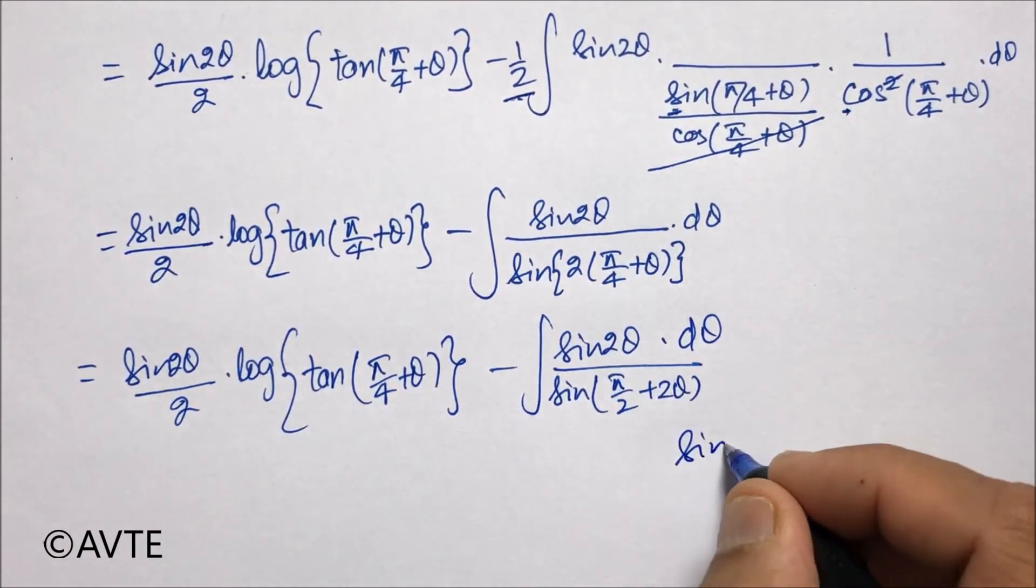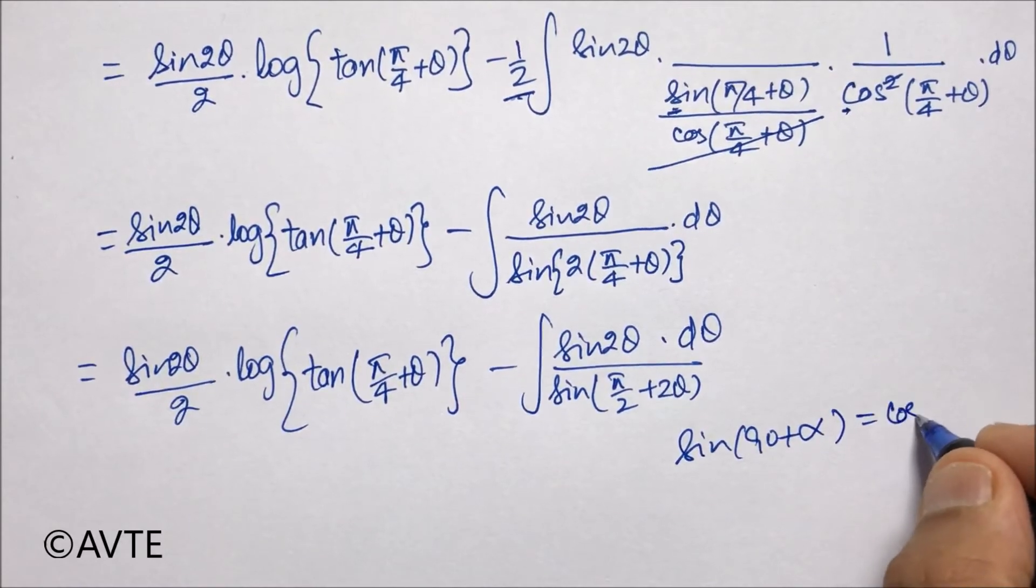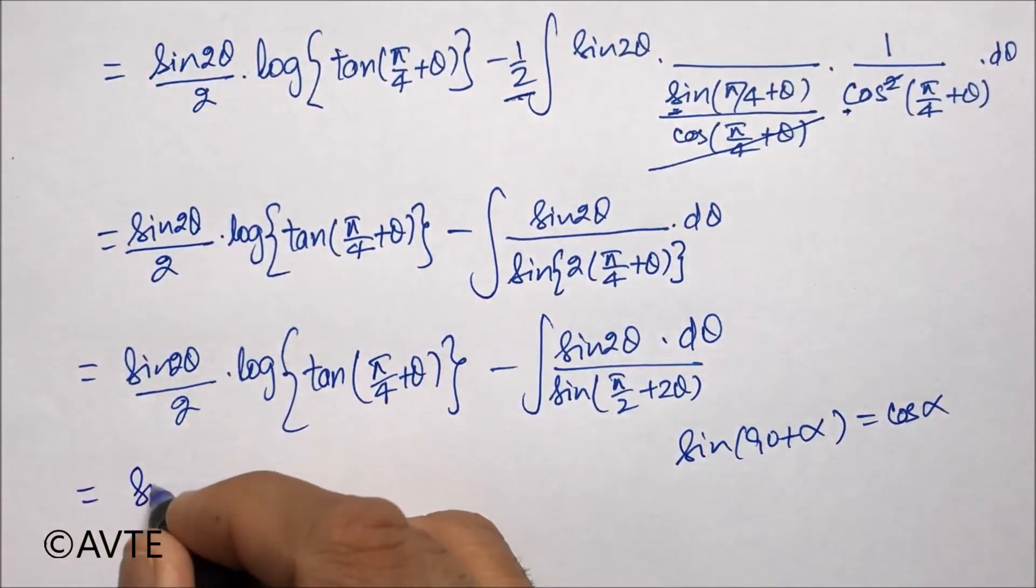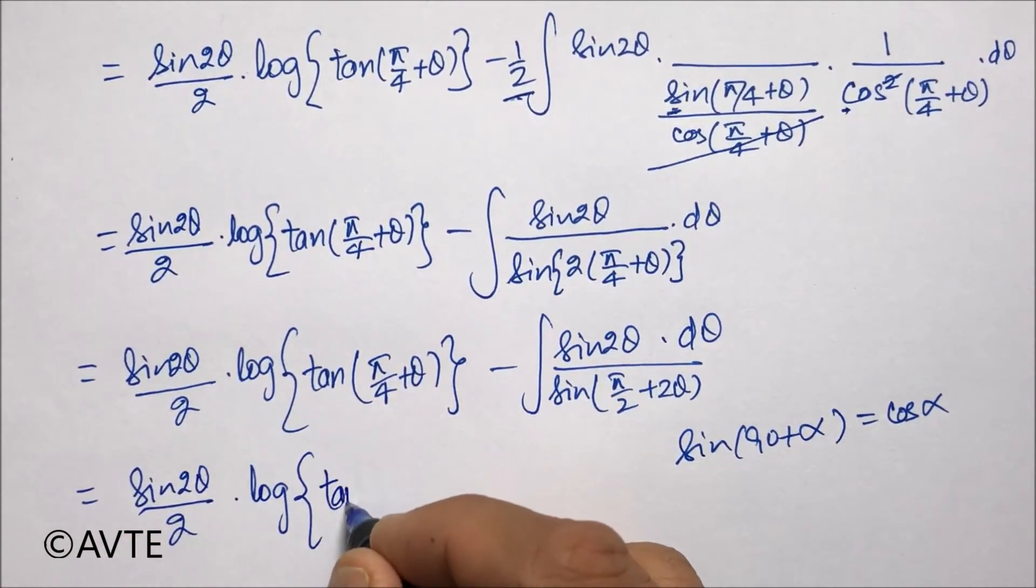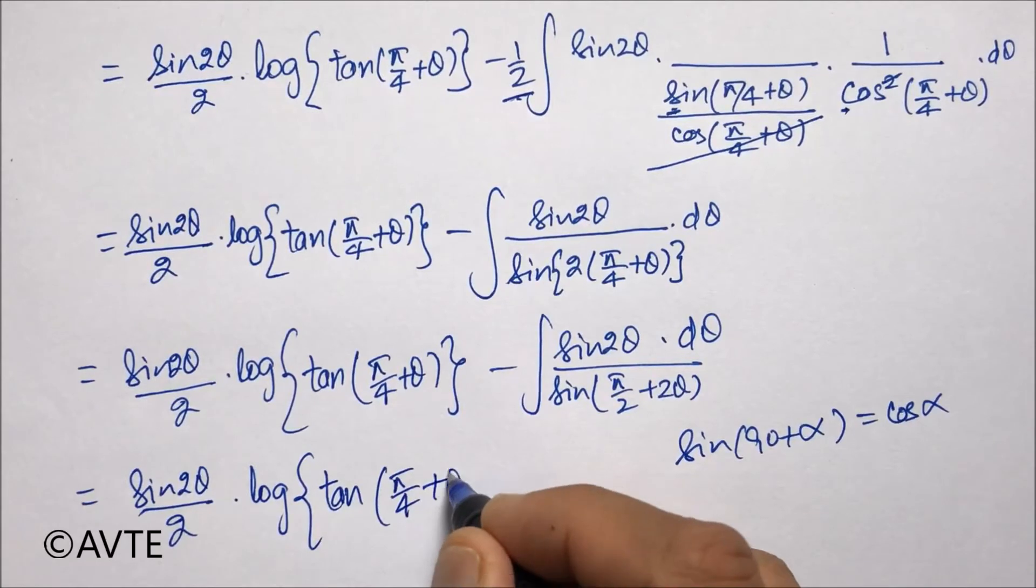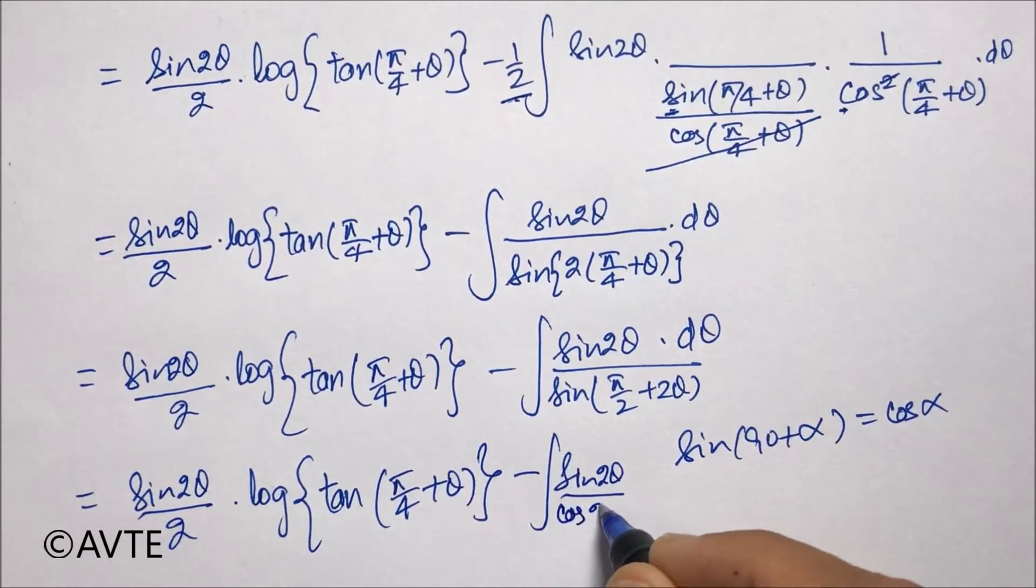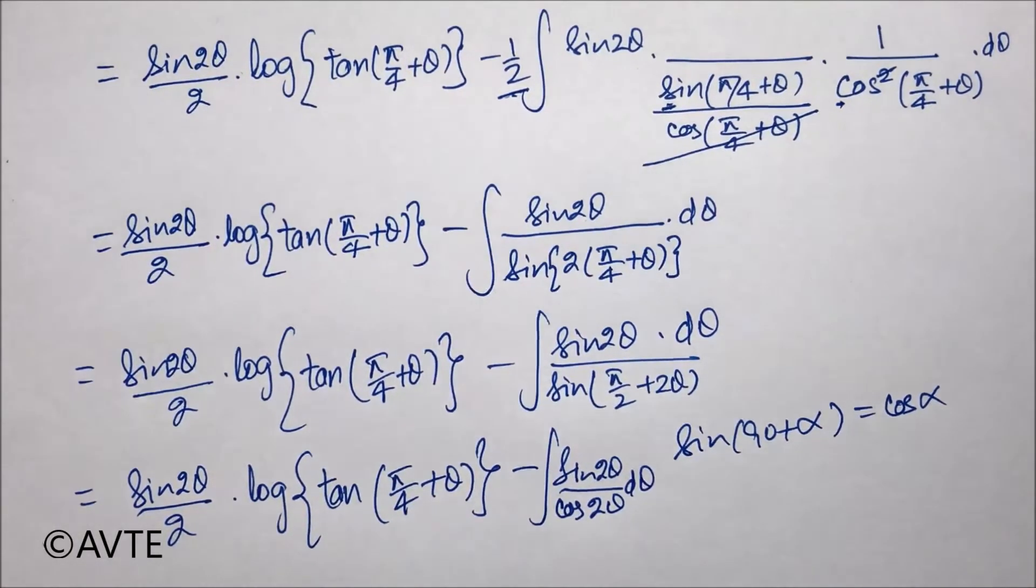And what is sin(90° + θ)? That is cos θ. So the denominator turns to cos 2θ. So what is sin 2θ over cos 2θ? That is tan 2θ.